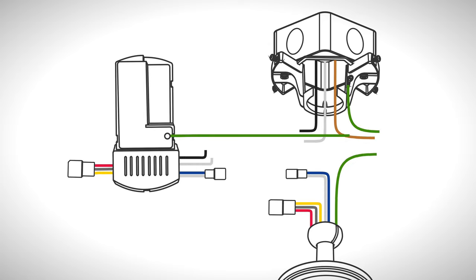Use wire nuts to connect the ground wires from the receiver, downrod, hanger bracket, and ceiling box together.